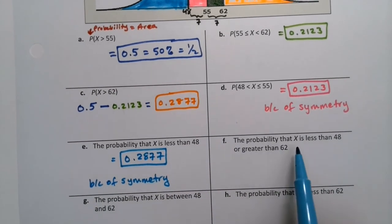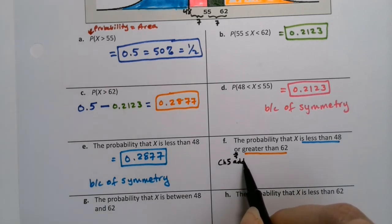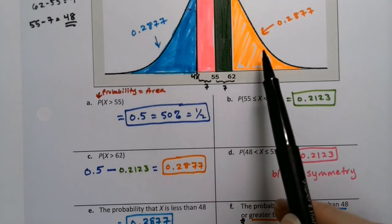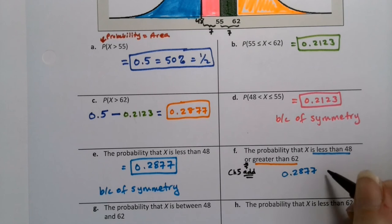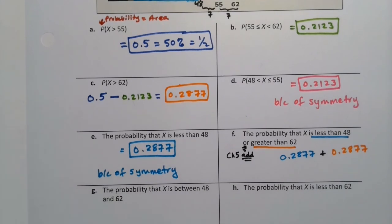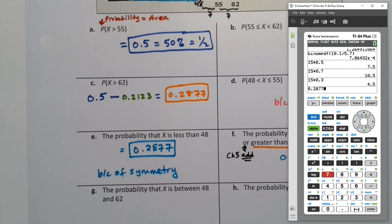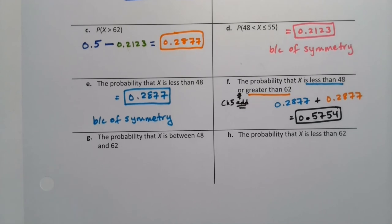Now let's really get into something good. The probability that X is less than 48, that's the blue zone, or greater than 62, that's the orange zone. And you'll notice it had a nice word in there, or, which we know from chapter 5 means we're going to add. It's the addition rule. They're disjoint, right? Either you are in this zone or you're in this zone. So you're going to take 0.2877 and add to it another 0.2877, which will get you 0.5754.